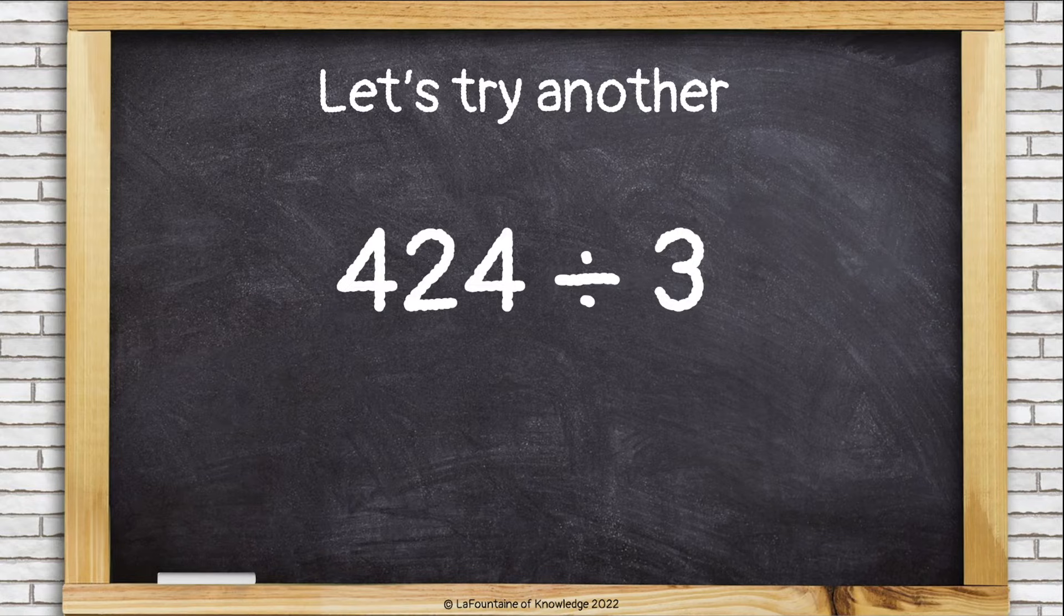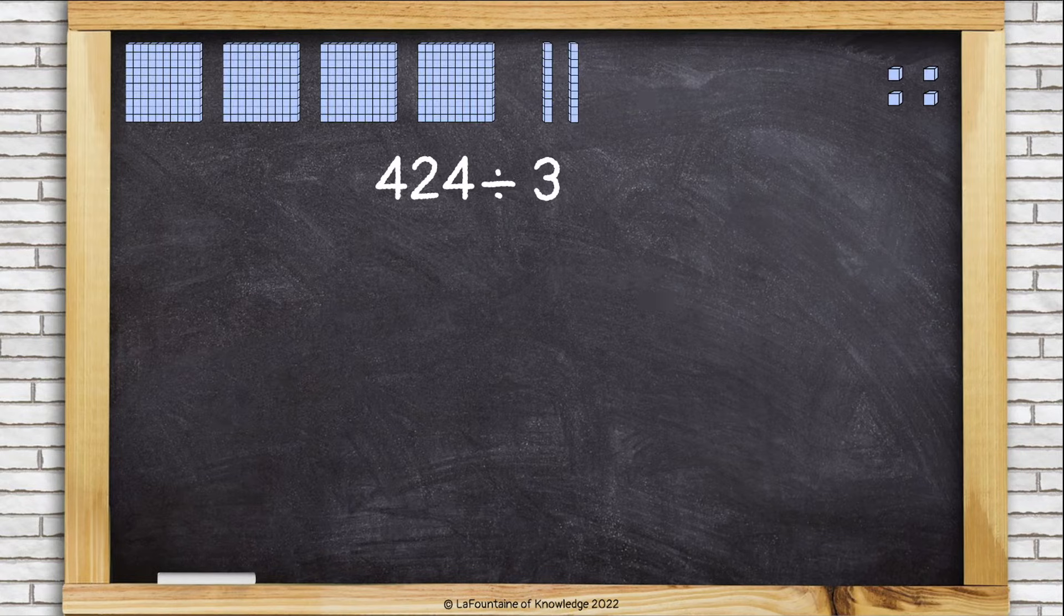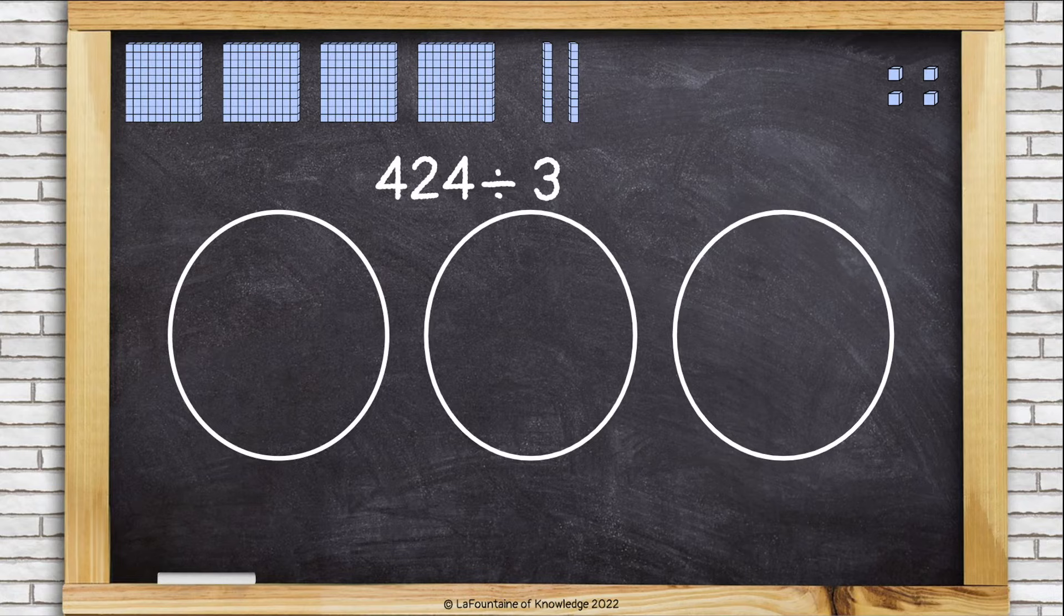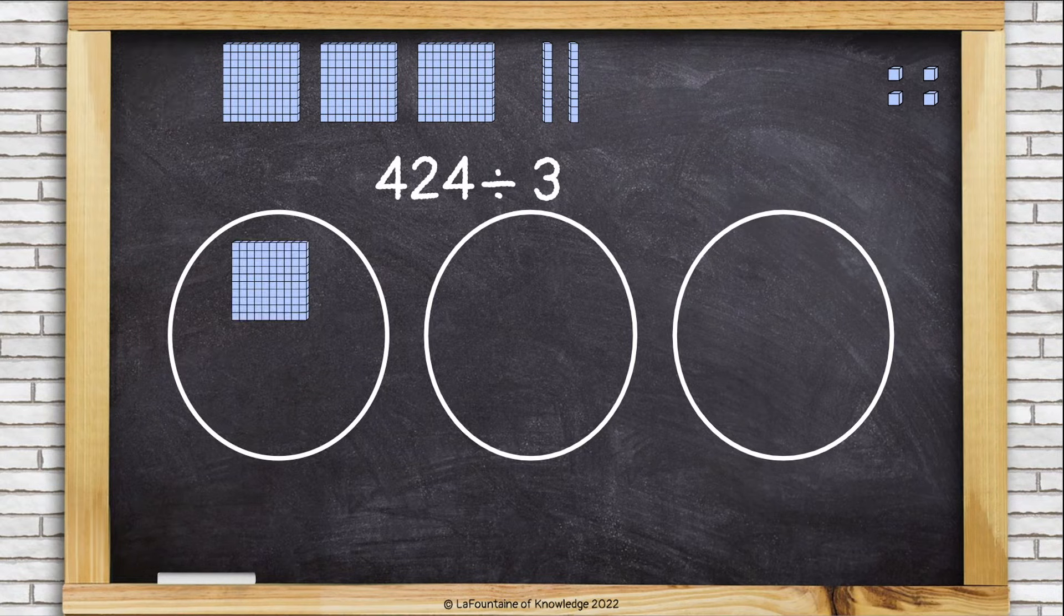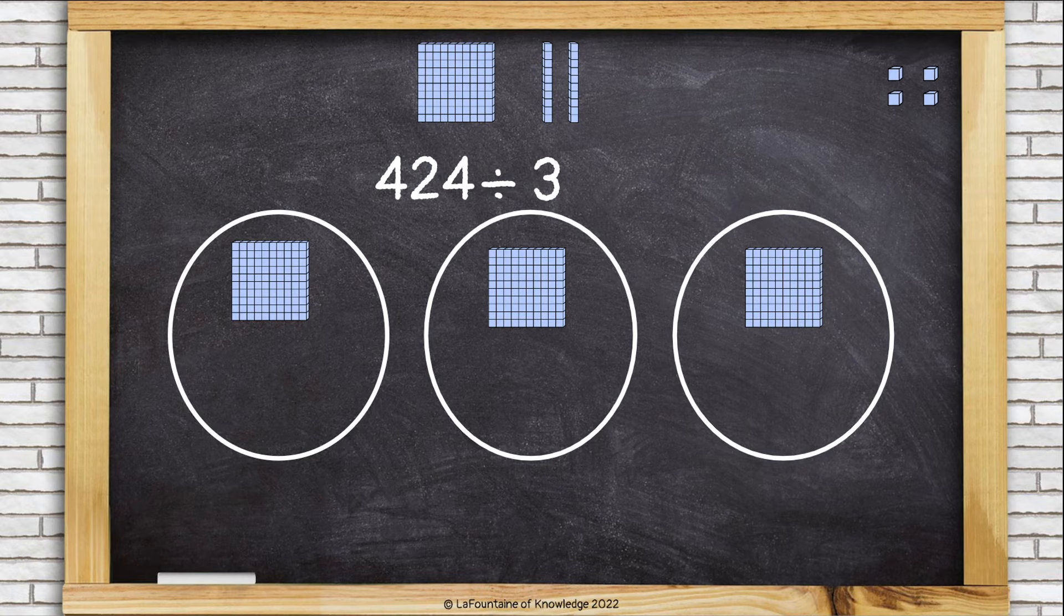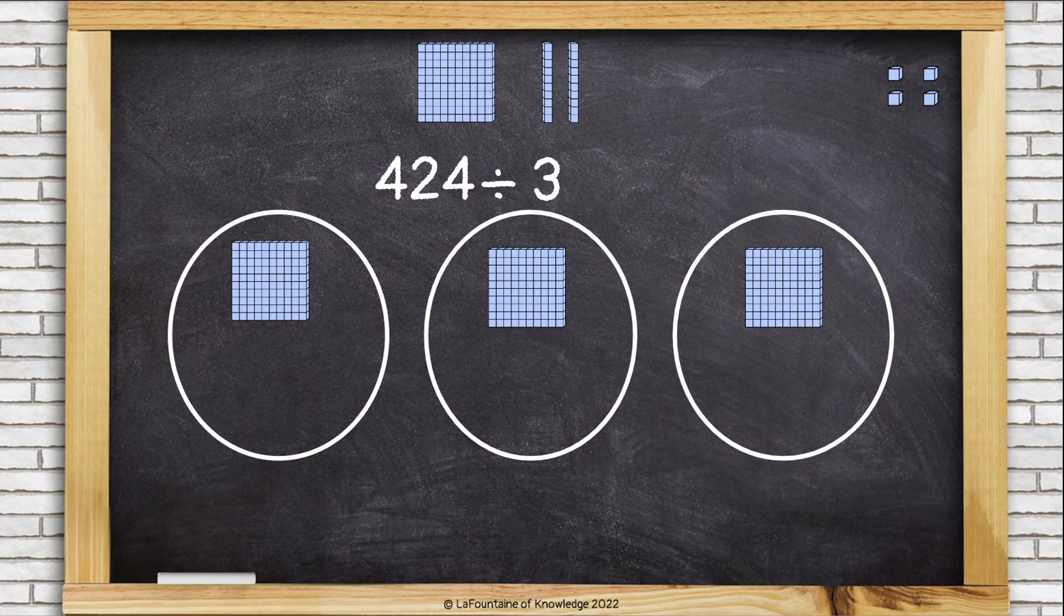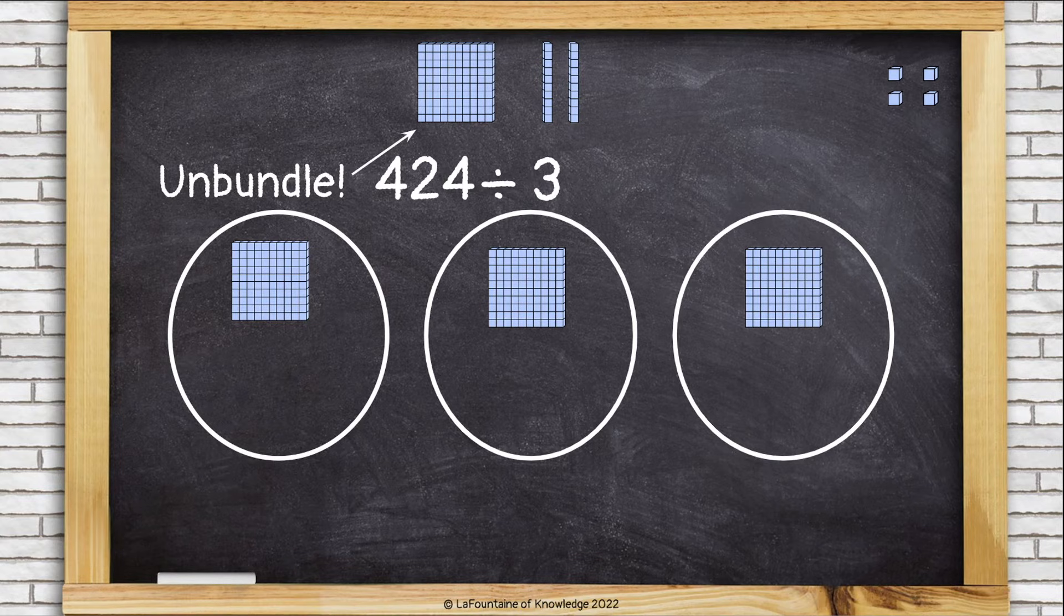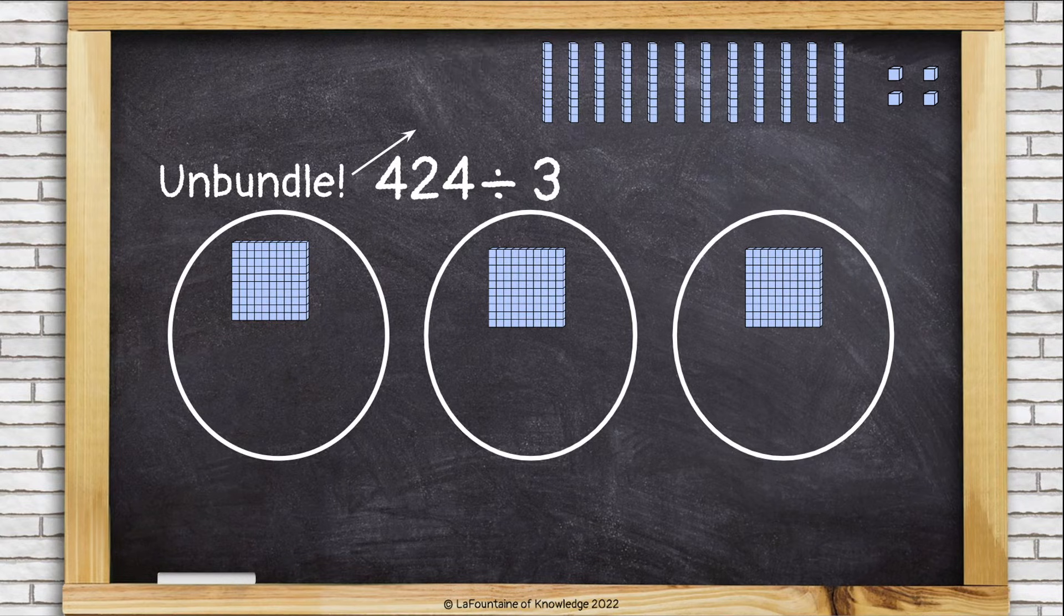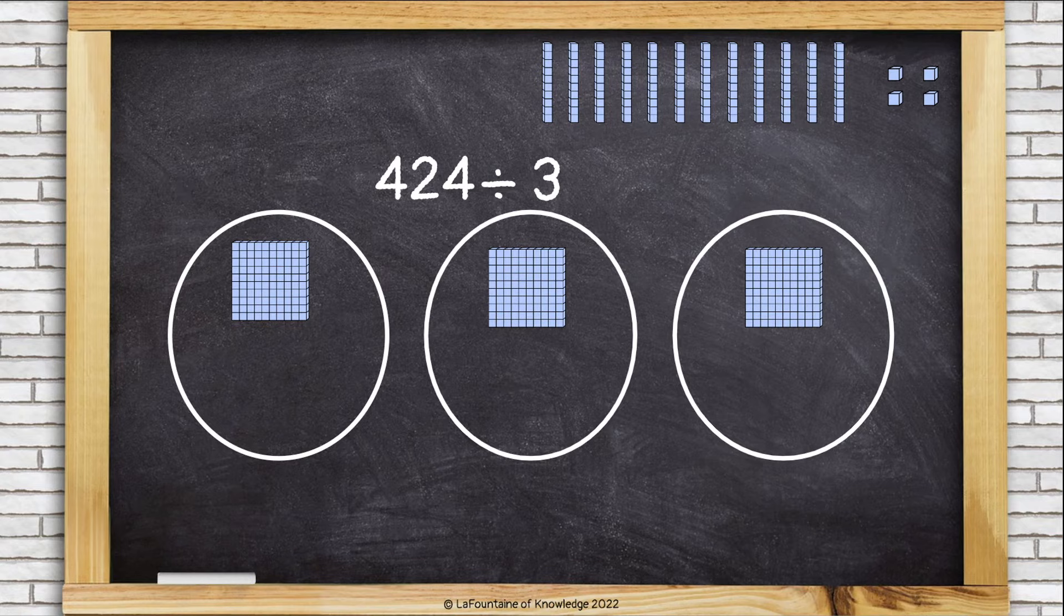Okay, let's look at 424 divided by 3. So starting with 424, and I need three groups. Now let's divide the hundreds. I can give each of them a hundred, but I have an extra hundred. I need to unbundle it and turn this hundred into ten more tens.